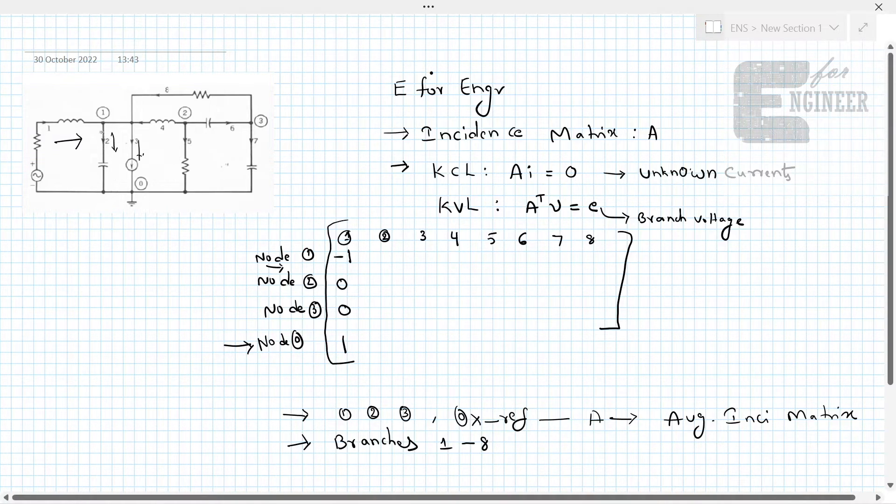We give as plus 1 here and then we will see this branch current 2. It is leaving first node. As it is leaving, we give 1 here and it is entering 0th node, so we give minus 1 here. These 2 rows has no relevance to this particular branch. And then this 3rd branch current is leaving first node, so we are writing 1 here and entering 0th node. Likewise, we write till this 8th branch.